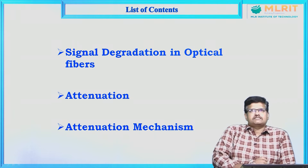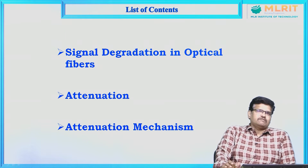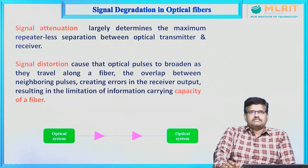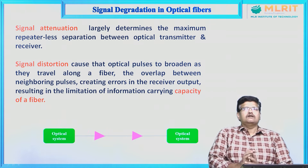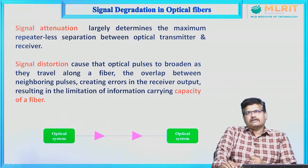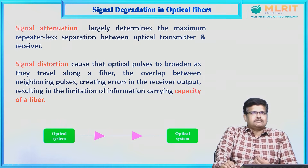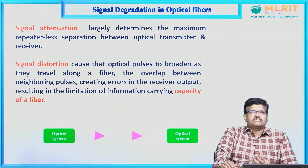Now let us see the list of content. Here, signal degradation in optical fibers covers attenuation and attenuation mechanisms. The major thing is attenuation, which helps find the maximum repeaterless separation between the transmitter and the receiver.